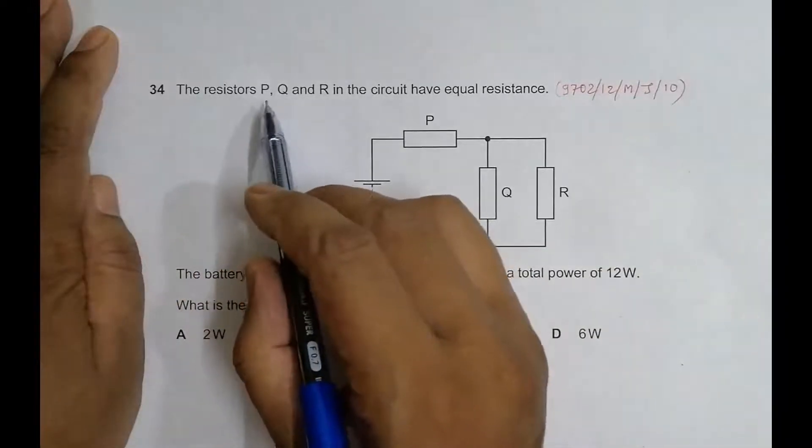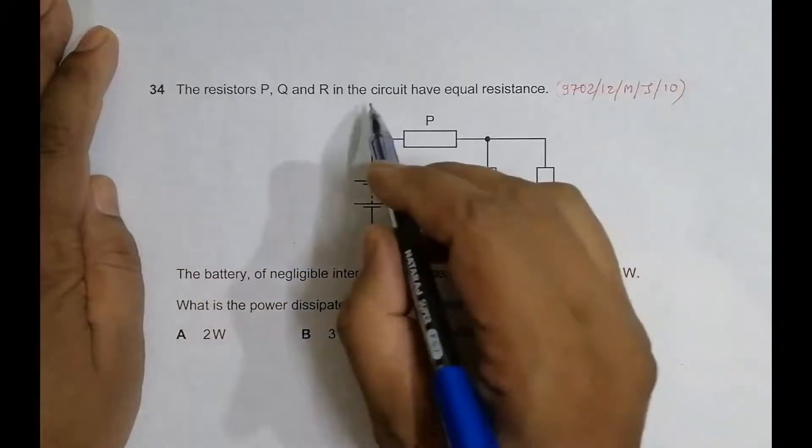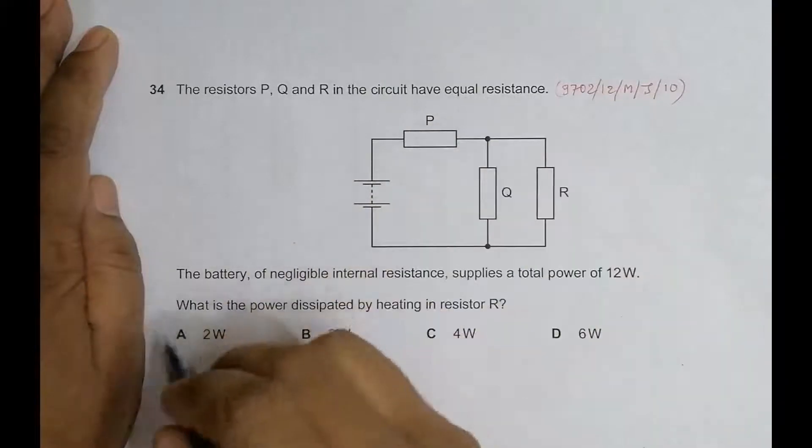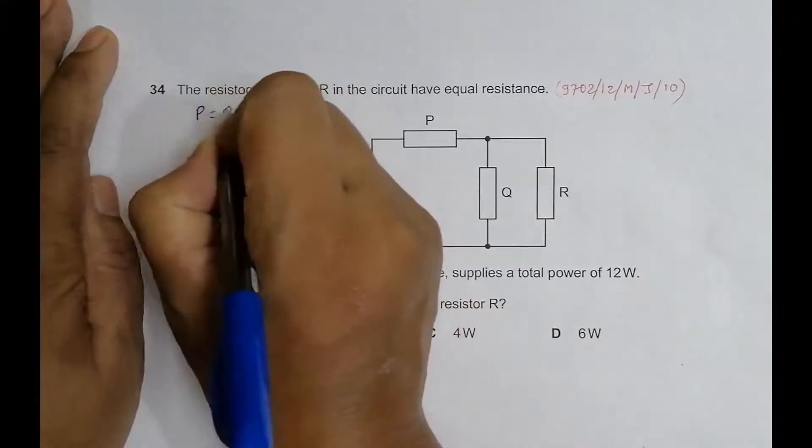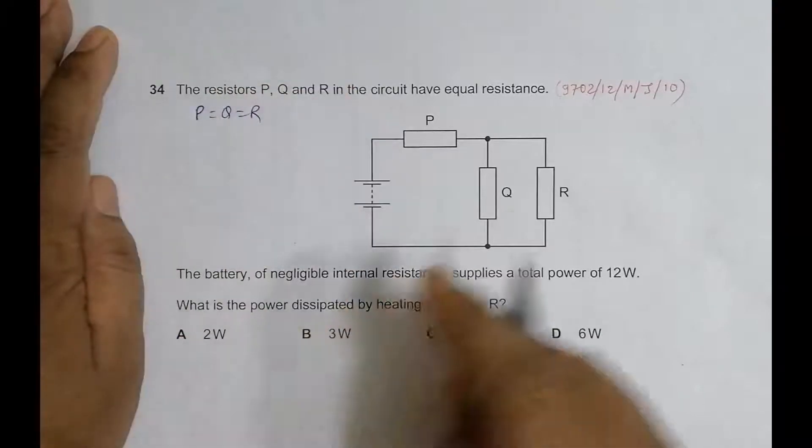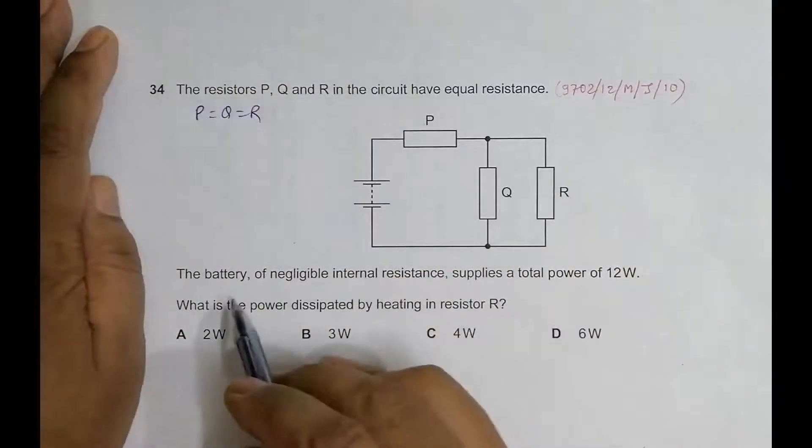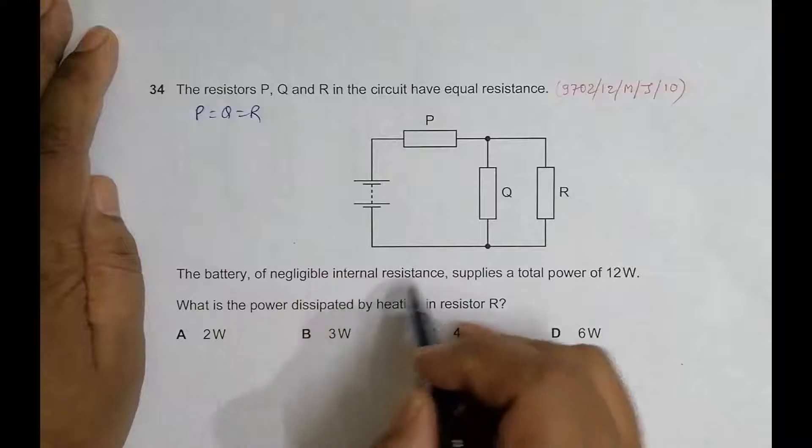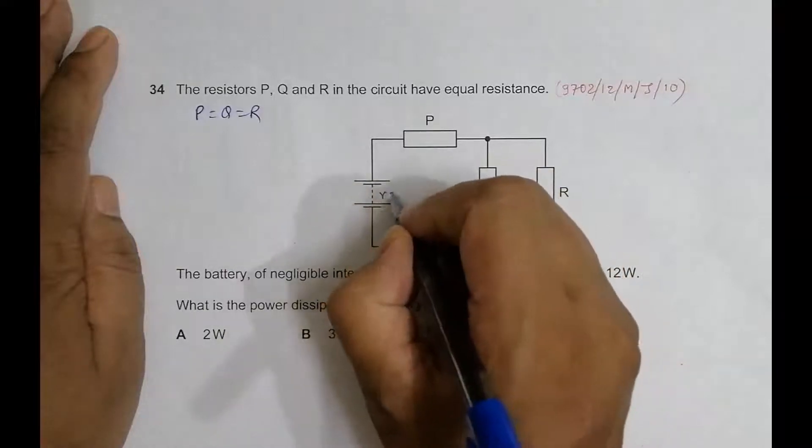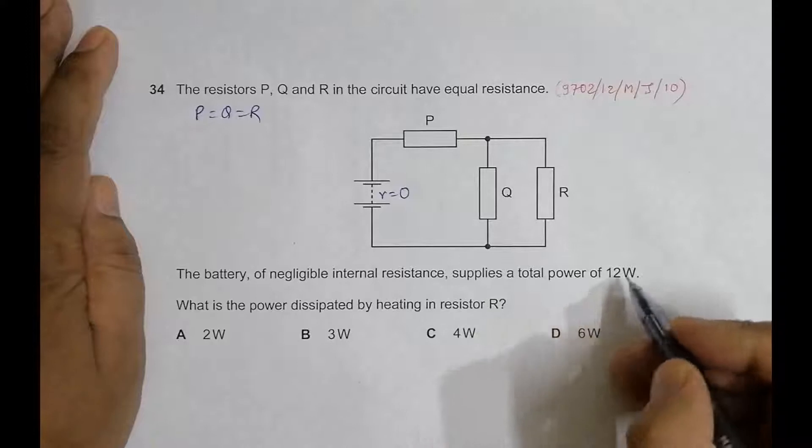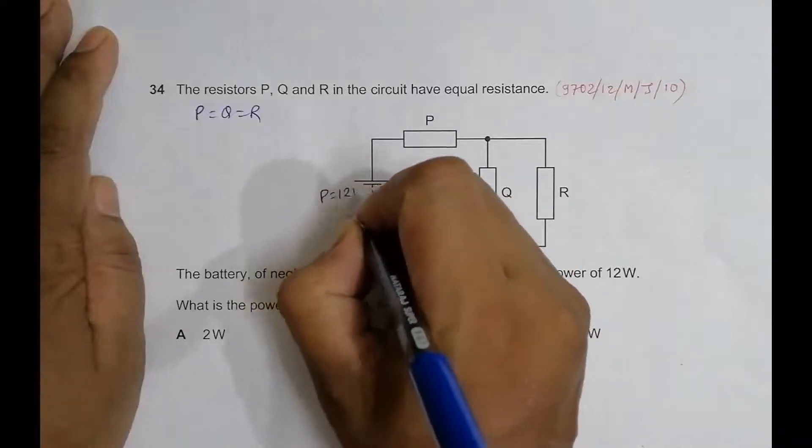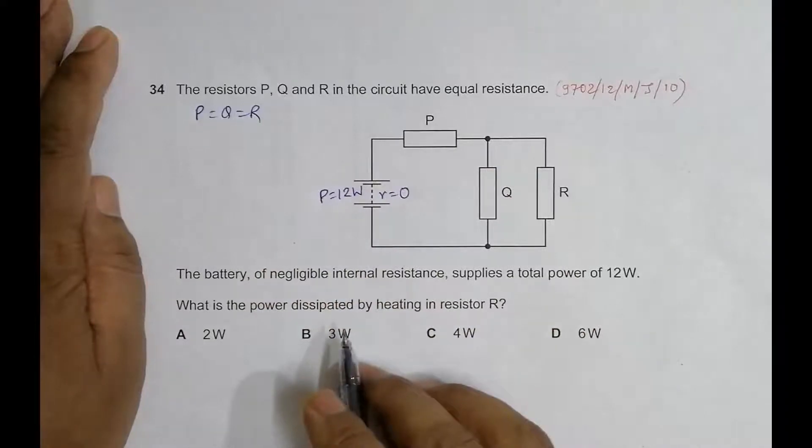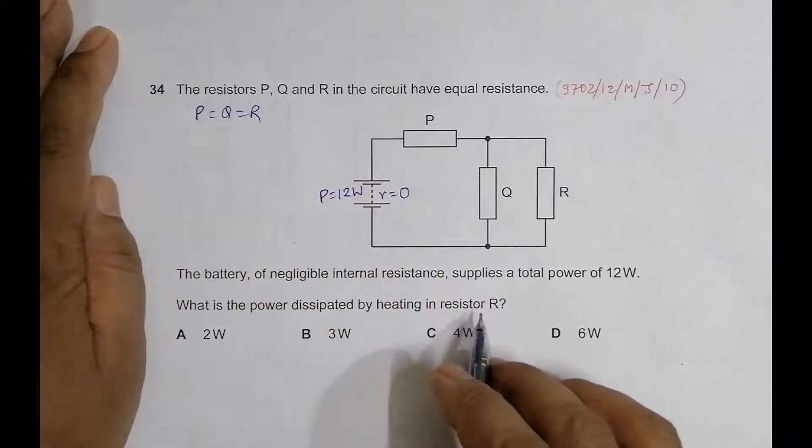The problem says that the resistors P, Q, and R in the circuit have equal resistances, so the very first condition is P = Q = R, their values are equal. The battery of negligible inner resistance, so R = 0, which makes things very easy. It supplies a total power of 12 watts, so the power is equal to 12 watts. What is the power dissipated by heating in resistor R?